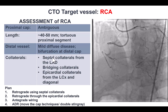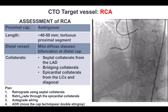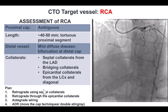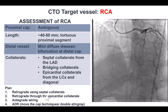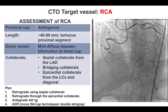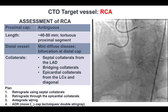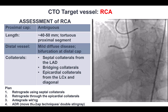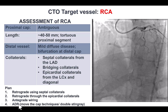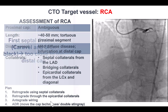Given the proximal cap ambiguity, our plan was to start with the primary retrograde approach using septal collaterals or epicardial collaterals. If that didn't work, to make attempts to resolve the ambiguity, either with wires or using proximal dissection and reentry to move the cap techniques.